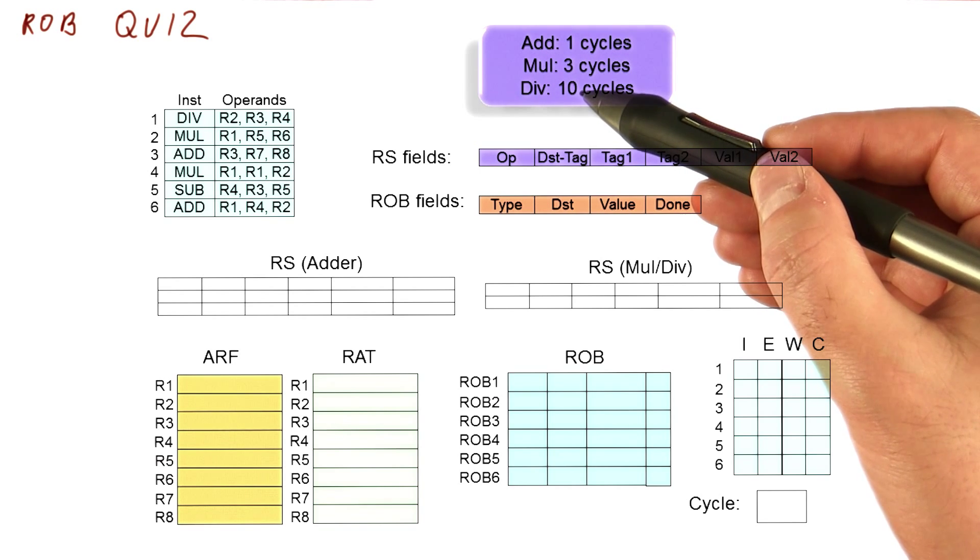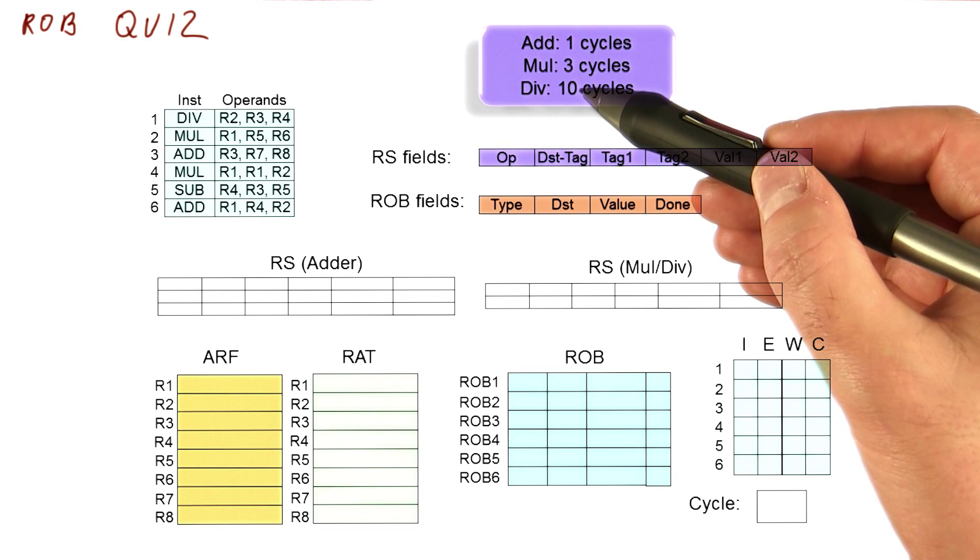The assumptions about dispatching and execution are the same as before. Basically, if an instruction captures results in one cycle, then it can dispatch in that cycle and begins executing in the next cycle.